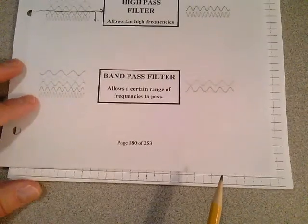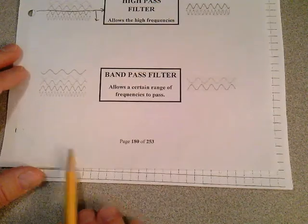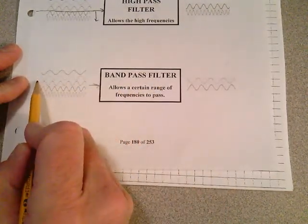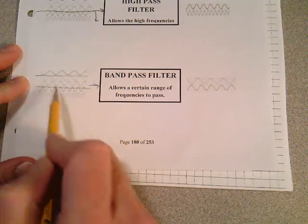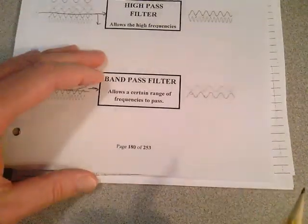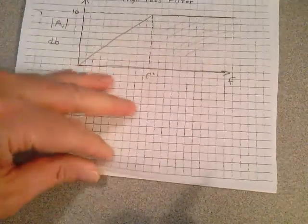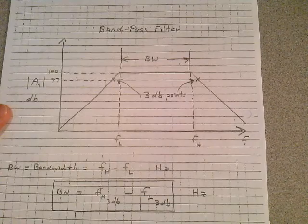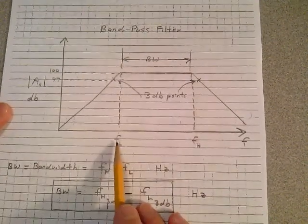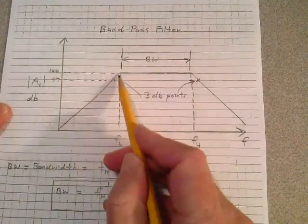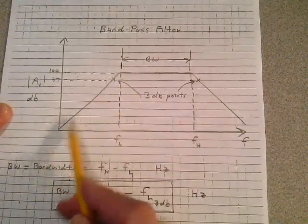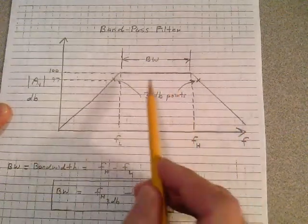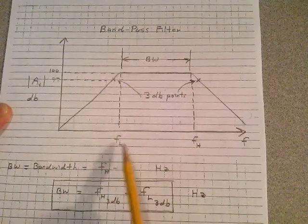A band-pass filter allows a certain range of frequencies to pass. There could be a hundred frequencies coming into this network, and in a band-pass filter we only want to pass a certain range. The response characteristic has two cutoff frequencies to look at: a lower frequency F sub L and a higher frequency F sub H. Frequencies below F sub L are diminished; frequencies above F sub H are not allowed to pass. But it allows frequencies between F sub L and F sub H to pass — that range is called the bandwidth.